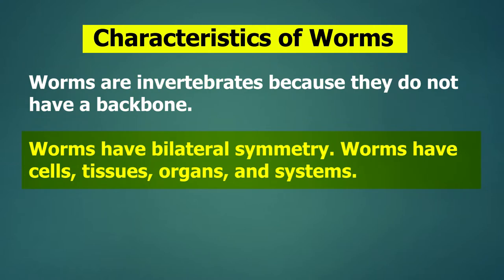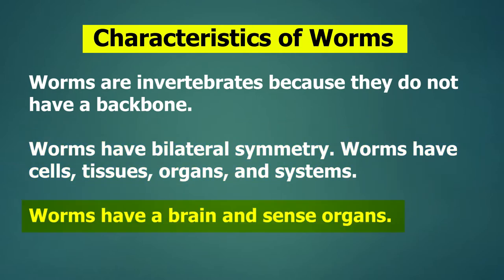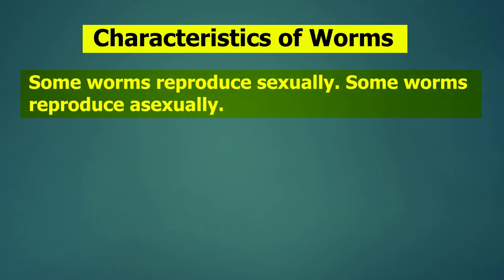Worms have bilateral symmetry. Worms have cells, tissues, organs, and systems. Worms have a brain and sense organs. Some worms reproduce sexually; some worms reproduce asexually.